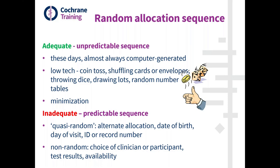Randomisation may also be stratified, meaning it is performed separately within subsets of participants defined by potentially important prognostic factors — for example, ensuring age is balanced between the two groups. Alternatively, a technique called minimisation can be used, which is based on a slightly different principle but generally includes a random element and a secure allocation system when used by an independent person. Other more exotic methods of randomisation exist, and some may require consultation with a methodologist to determine whether they are adequate.